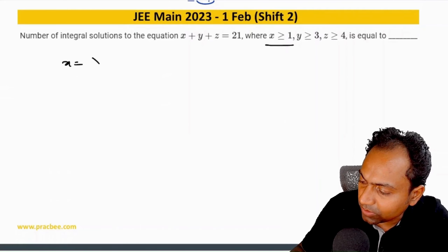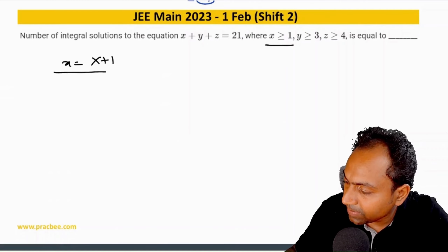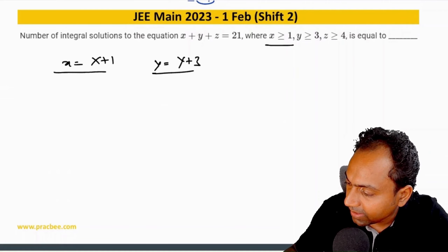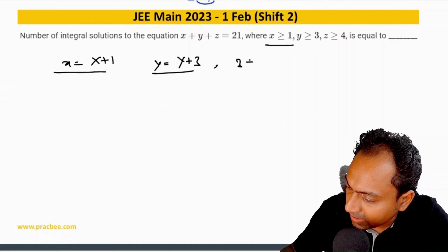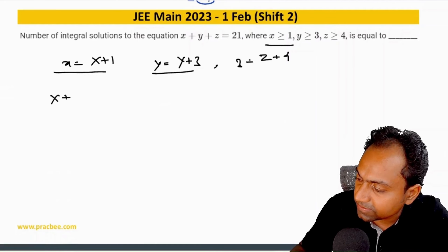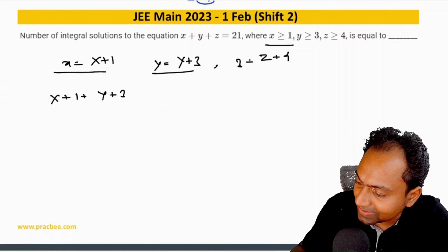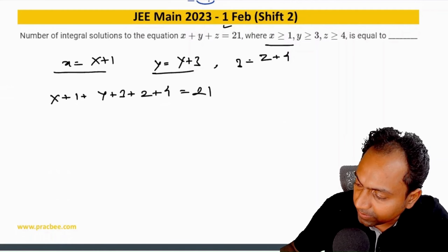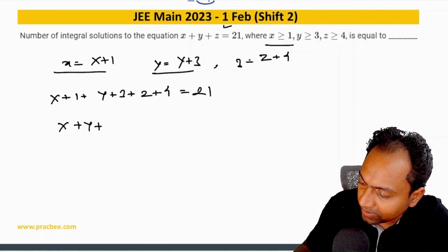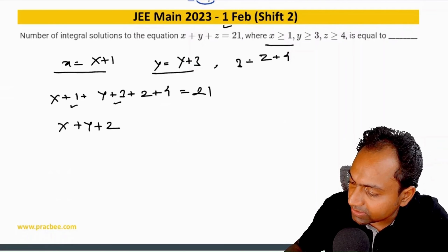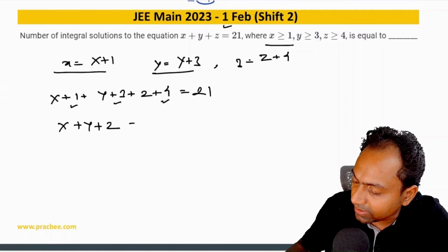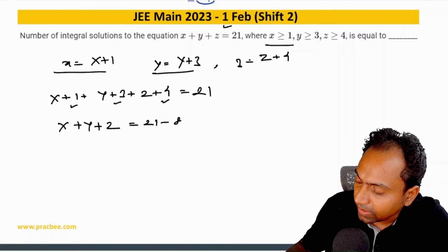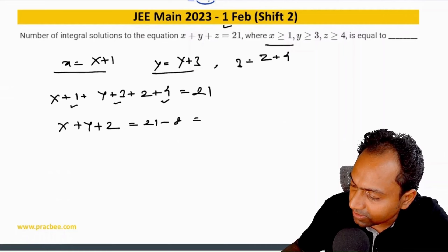In place of x we can put X+1, in place of y we can put Y+3, and instead of z we can put Z+4. If we do so, (X+1) + (Y+3) + (Z+4) adds up to 21. So X + Y + Z equals 21 minus 8, which becomes 13.